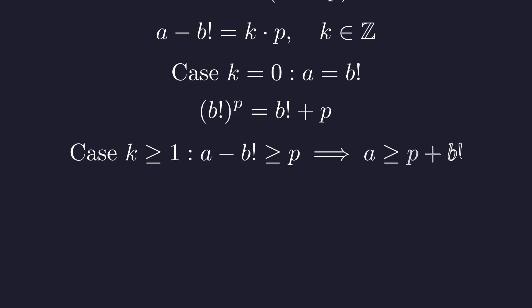If k is 1 or greater, then A is greater than or equal to P plus B factorial. This directly contradicts our finding that A must be less than P, so k cannot be positive.